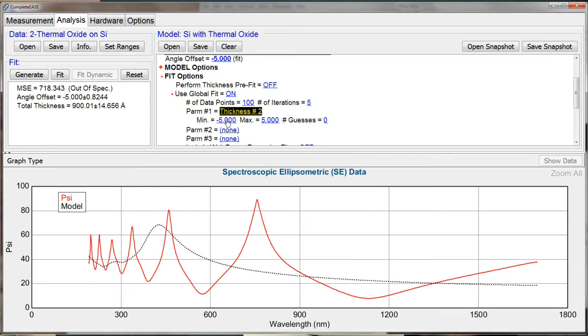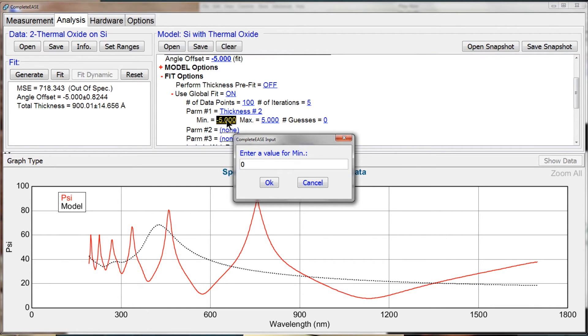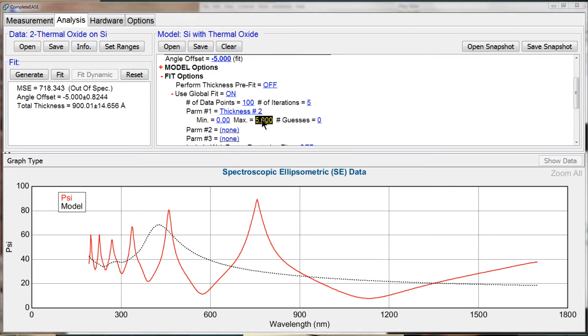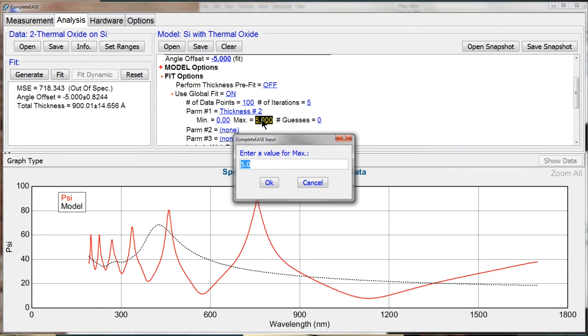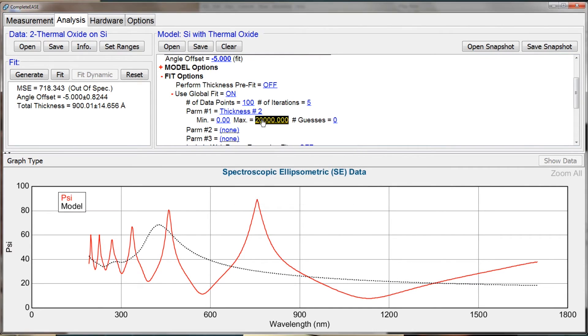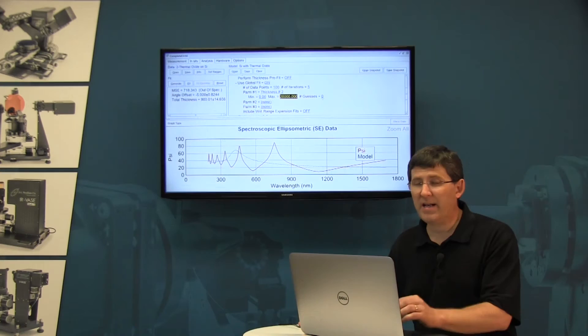Now when I do that, I have to give it a minimum thickness, maybe zero, a maximum thickness, maybe 20,000 angstroms, and a number of guesses.